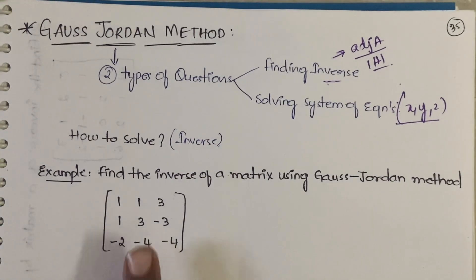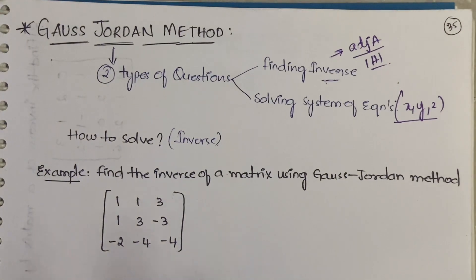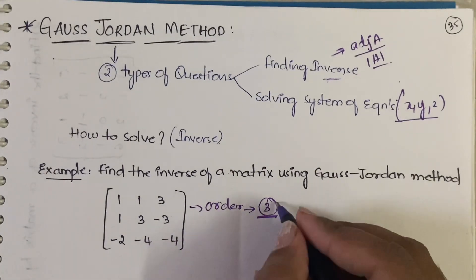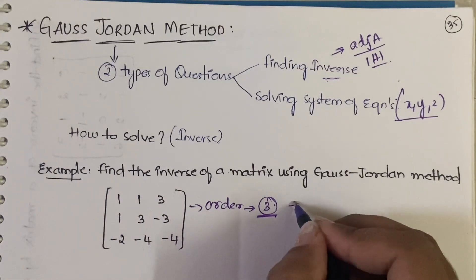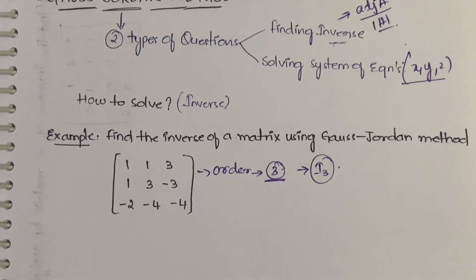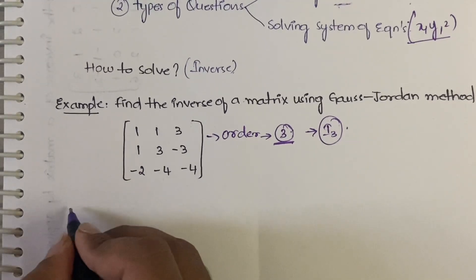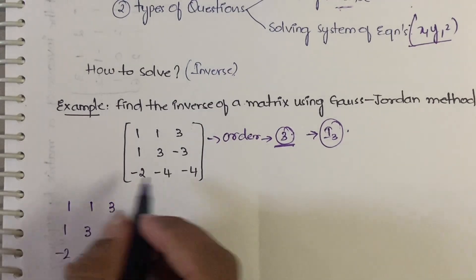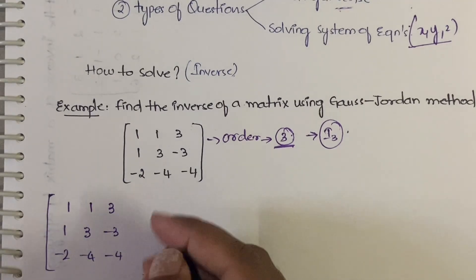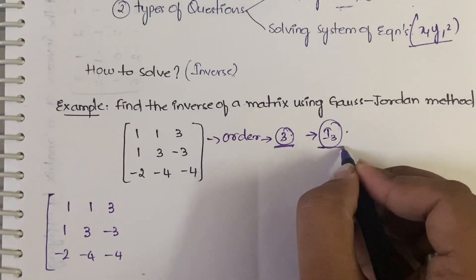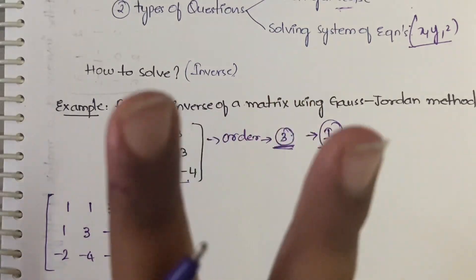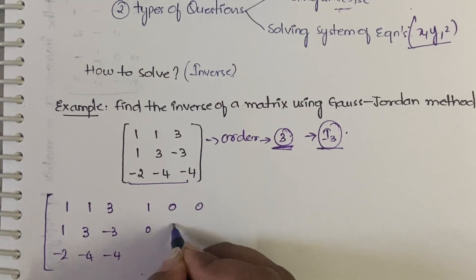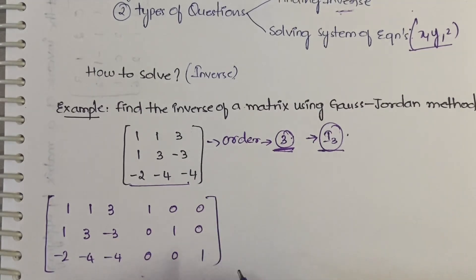Now let's see how to find the inverse of a matrix using the Gauss-Jordan method. A matrix is given to us. The first step is to identify the order — this is a 3×3 matrix, so the order is three. You then write a third-order identity matrix beside it. Write the original matrix as it is: 1, 1, 3 / 1, 3, -3 / -2, -4, -4.